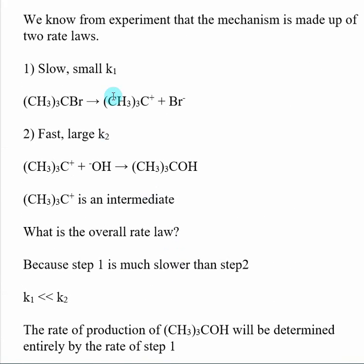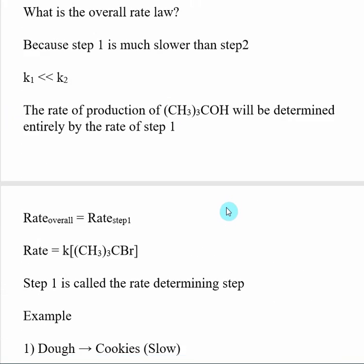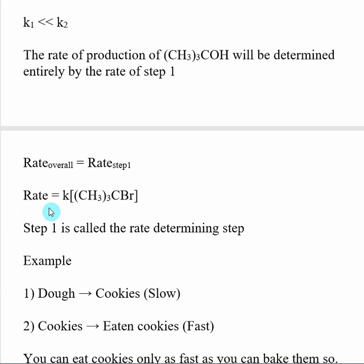Since this is an elementary process, we can get the rate law expression for step one by looking at the stoichiometry of the reaction. The rate is equal to k times the concentration of my reactant, with an implied order of one — so this is first order. That rate law expression for the first step becomes the rate law expression for the overall reaction, because step one is the rate determining step.